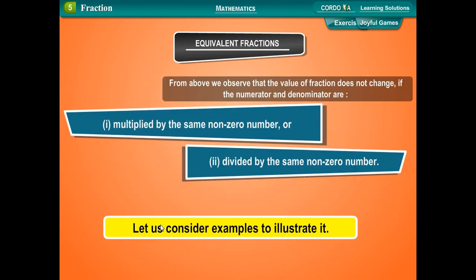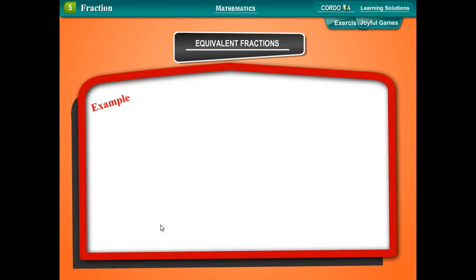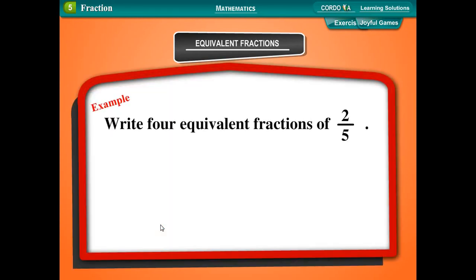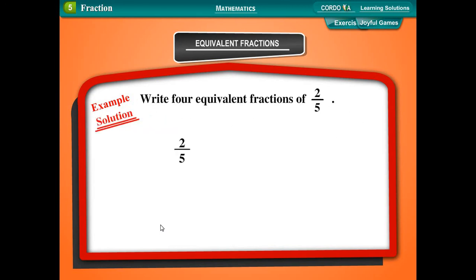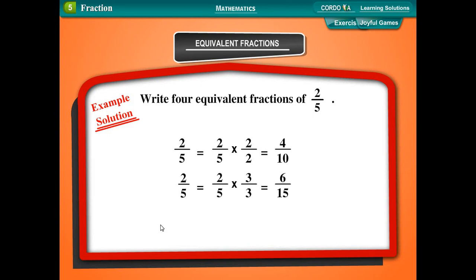Example: Write 4 equivalent fractions of 2 upon 5. Solution: The equivalent fractions of 2 upon 5 are: 2/5 × 2/2 = 4 upon 10; 2/5 × 3/3 = 6 upon 15; 2/5 × 4/4 = 8 upon 20; 2/5 × 5/5 = 10 upon 25. Hence, the equivalent fractions of 2 upon 5 are 4 upon 10, 6 upon 15, 8 upon 20, and 10 upon 25.